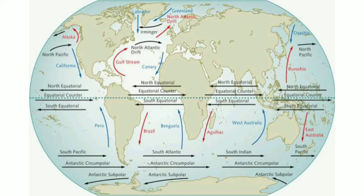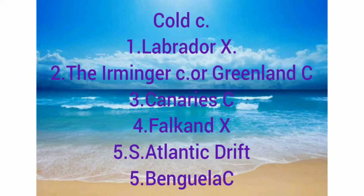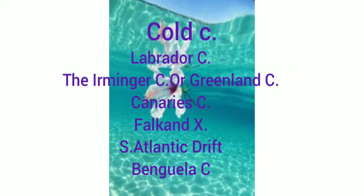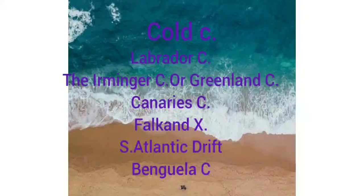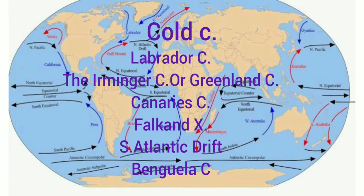Now let's look at the cold currents of the Atlantic Ocean. The Labrador Current originates in Baffin Bay, drifts southeastward between Baffin Island and Greenland, and merges with the Gulf Stream off Newfoundland. The Greenland Current flows between Greenland and Iceland and merges with the North Atlantic Drift. The Canary Current is a continuation of the North Atlantic Drift along the western coast of the Iberian Peninsula and North Africa in the southern direction.